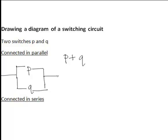The other way a circuit can be connected is in series, and in that case it is said P and Q, written as P times Q. The way in which we draw a diagram for a circuit connected in series is like this, and in that case current will flow through the circuit only if both switches P and Q are closed at a given time.